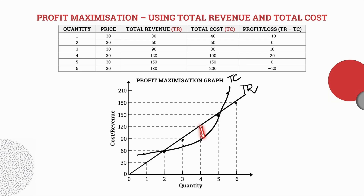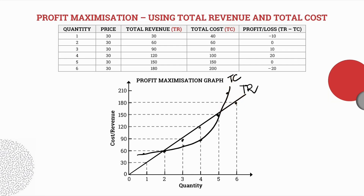Profit is maximized where the gap between total revenue and total cost is the widest. At quantity 6, my total costs lie above my total revenue, meaning a loss has been incurred.